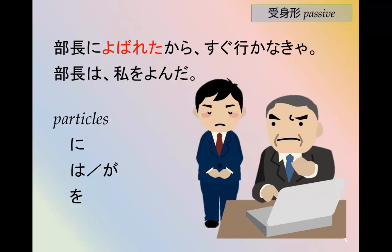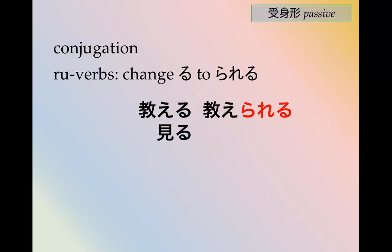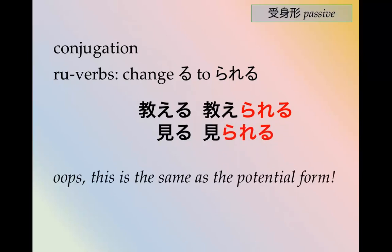Someone else did an action that affected you. So you can use the passive in conjunction with other forms to indicate something happening to you and another action you have to do at the same time. Note that the person it was done by gets marked by に. は or が marks the subject — the person who was called — which is omitted in the first sentence. Conjugation is not very hard. For る verbs you change the root to られる. So 教える becomes 教えられる, 見る becomes 見られる. Watch out — this is the same as the potential form.